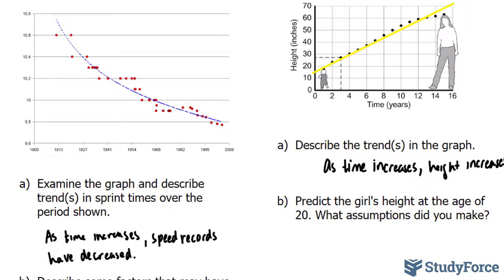So for B, we can say that she will be no taller than 65 inches after her 20th birthday. At 20, she will be between 60 and 65 inches. And the assumption that we made was that height is not continuous. It will stop at some point in one's lifetime.